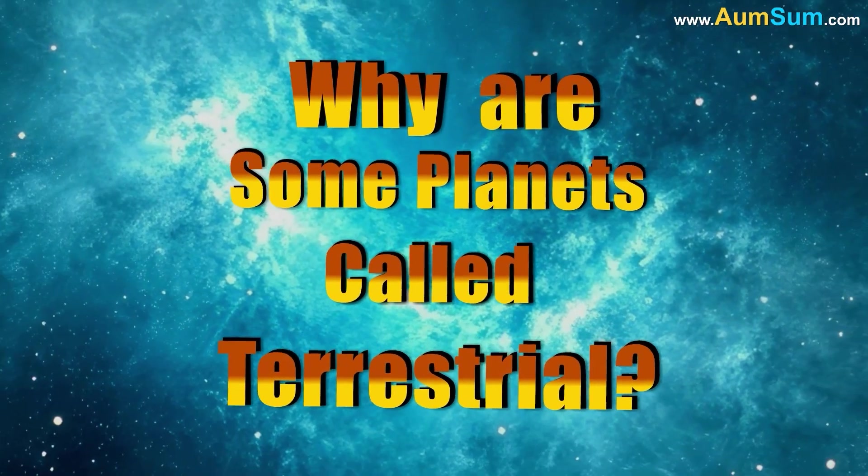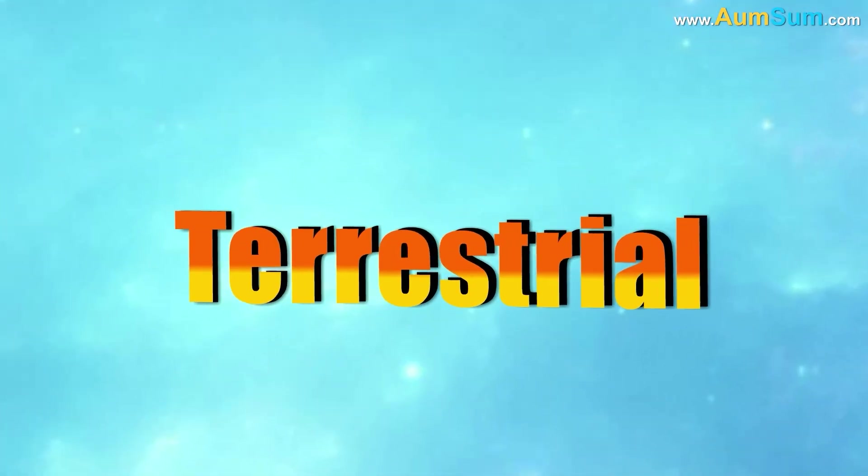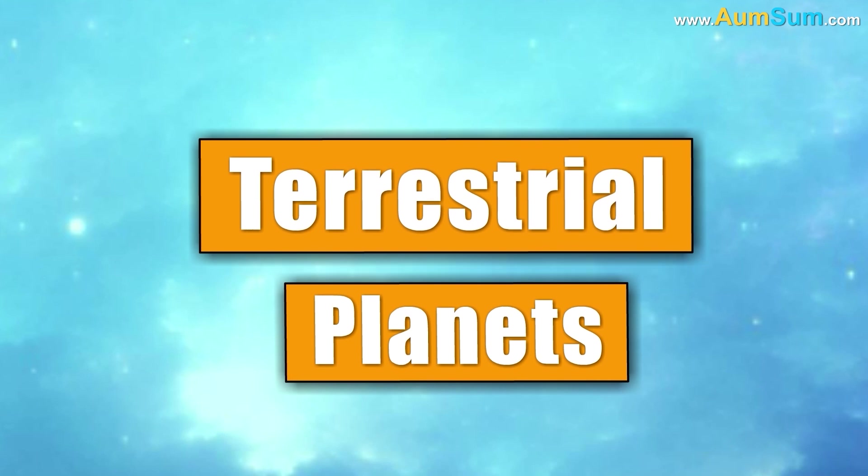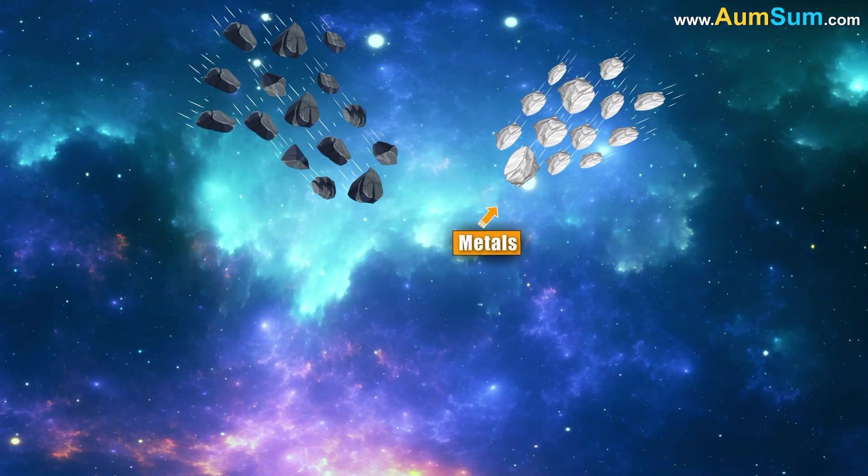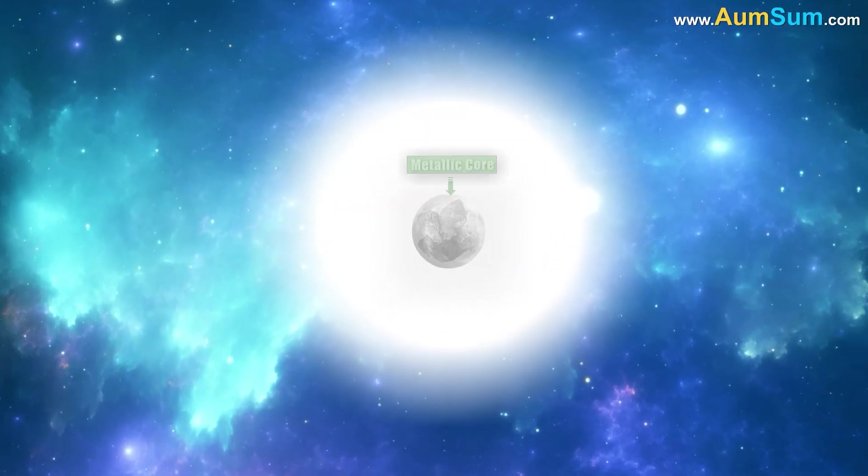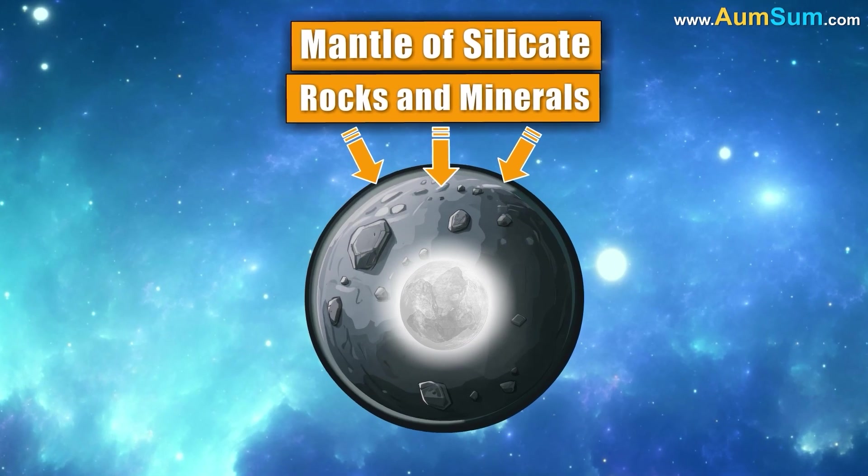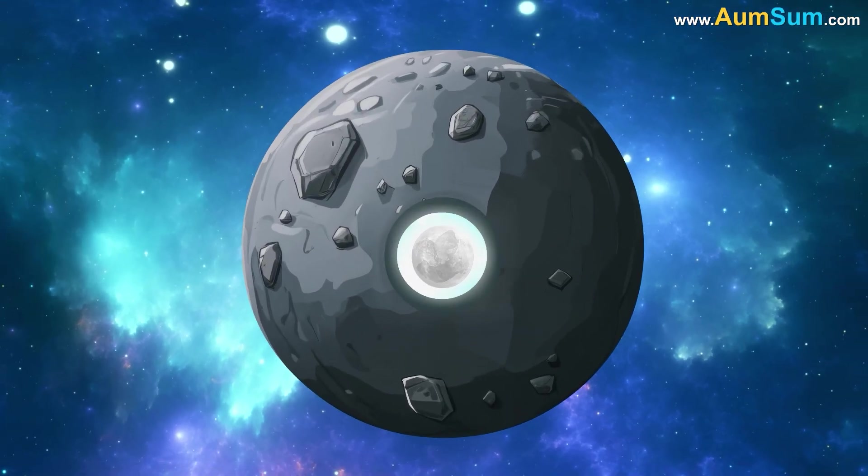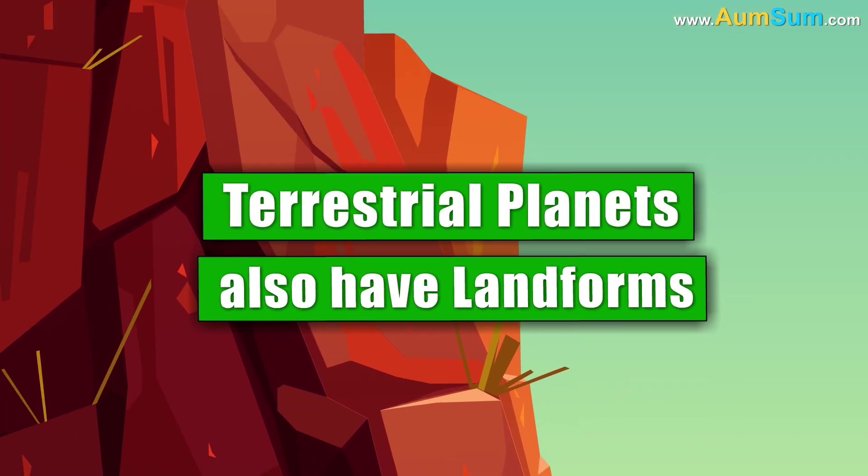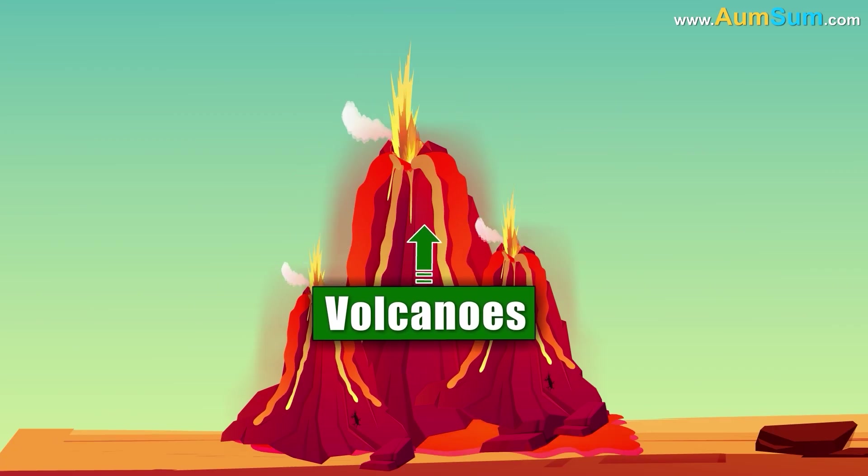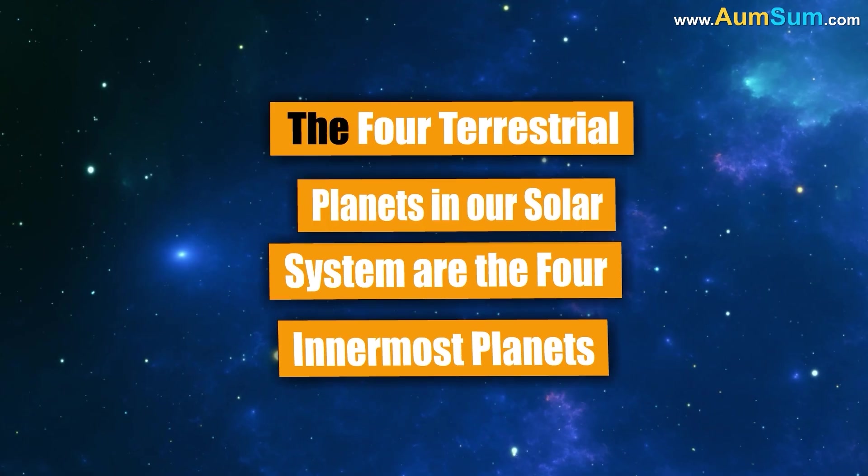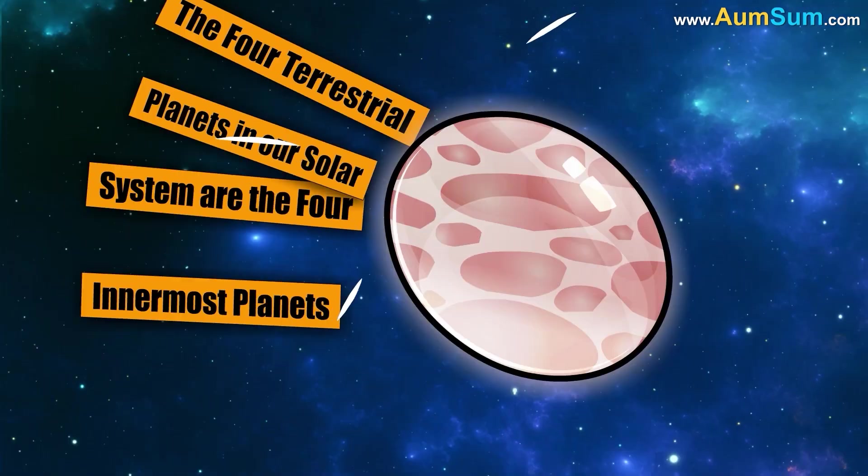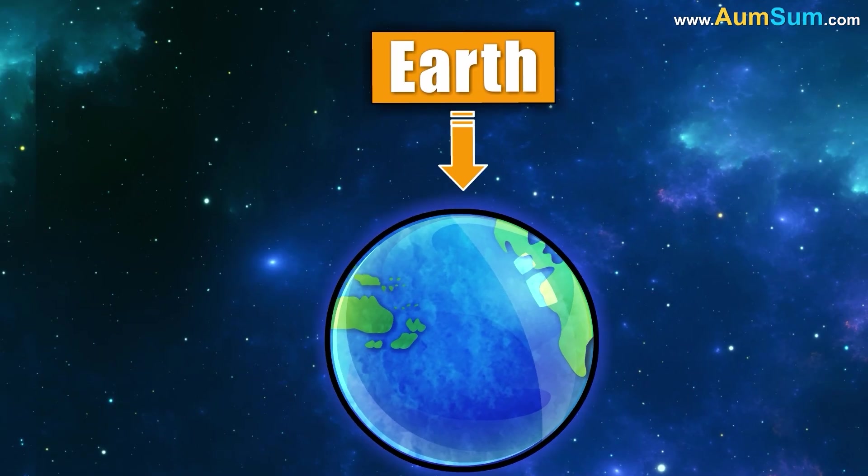Why are some planets called terrestrial? The word terrestrial comes from the Latin word terra, which means Earth. Terrestrial planets are made of rocks and metals and have a central metallic core surrounded by a mantle of silicate rocks and minerals. The mantle is usually the largest part of the planet by volume. Terrestrial planets also have landforms like cliffs, valleys, volcanoes and craters. The four terrestrial planets in our solar system are the four innermost planets: Mercury, Venus, Earth and Mars.